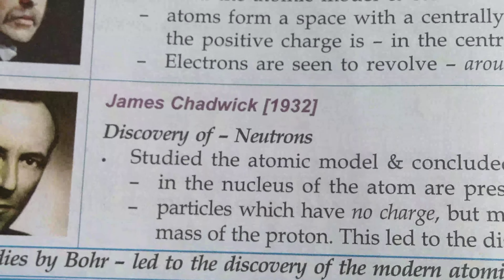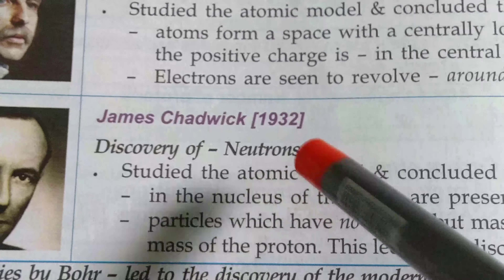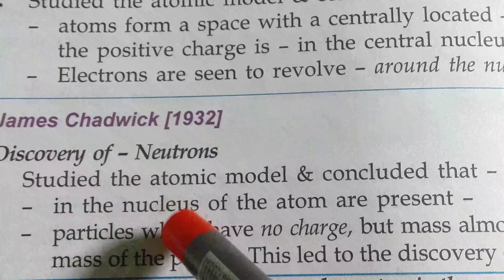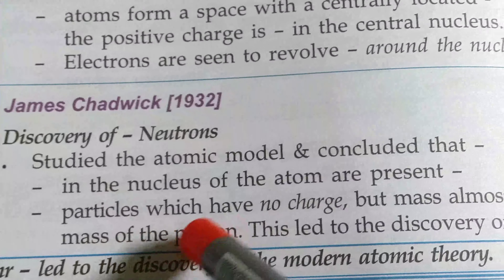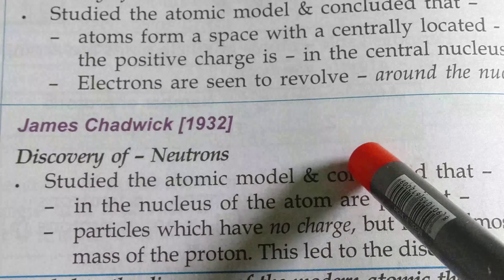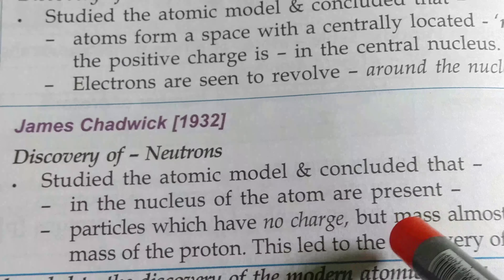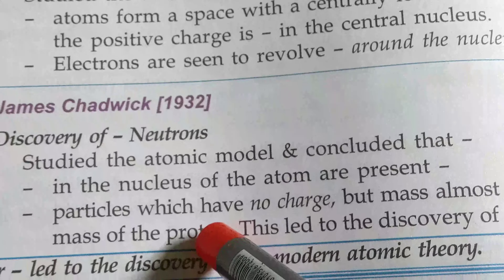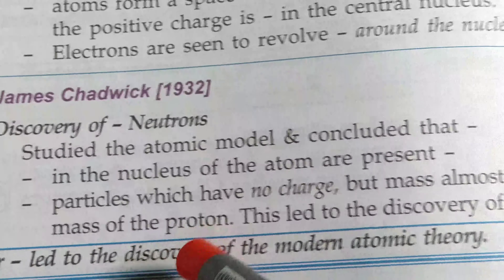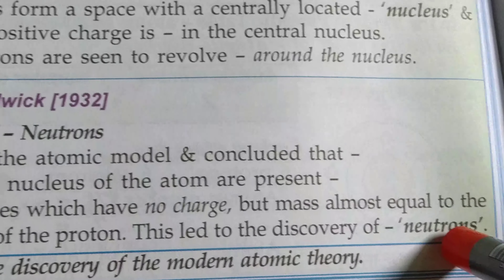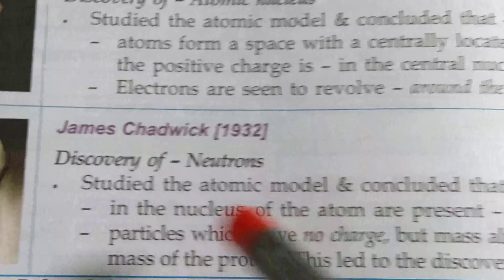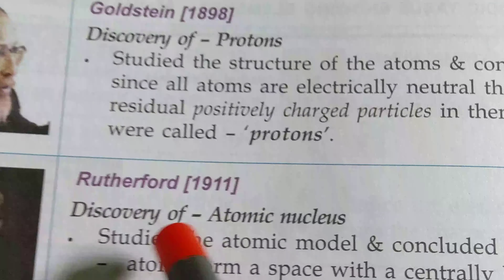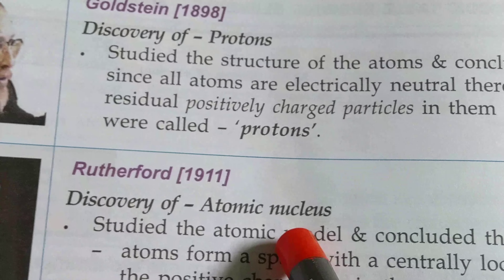Next, James Chadwick — discovery of neutrons. He studied the atomic model and concluded that in the nucleus of an atom there are present particles which have no charge. These particles in the center of the nucleus have no charge, but their mass is almost equal to the mass of a proton. This led to the discovery of neutrons. So neutrons were discovered by James Chadwick. Students, be careful about the names of scientists and their discoveries, as your questions will be MCQ type.